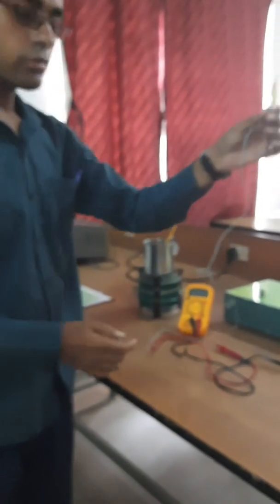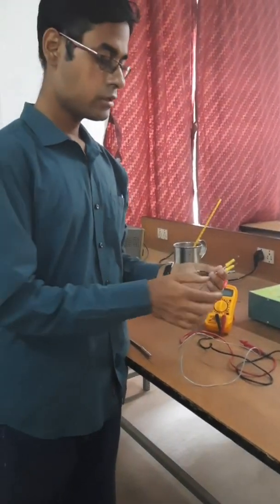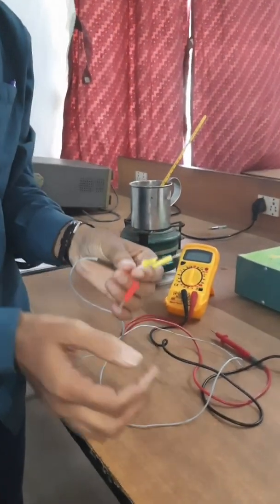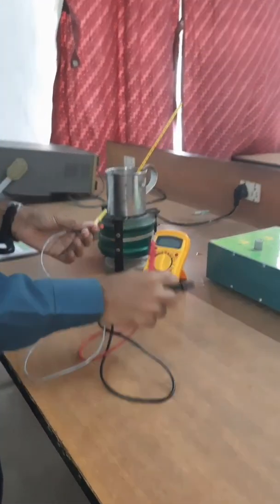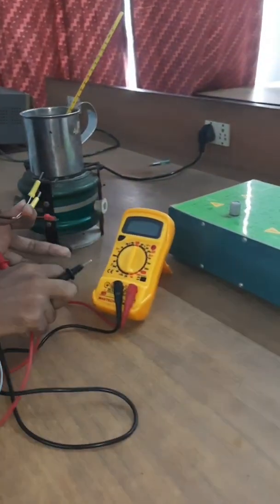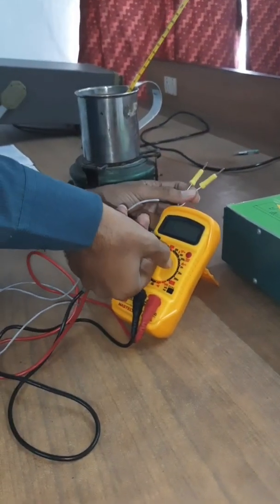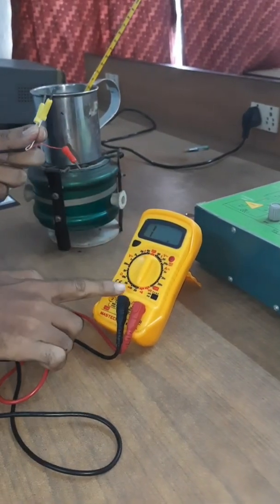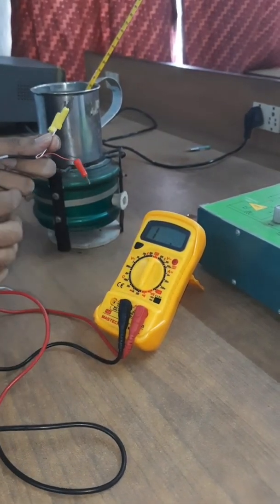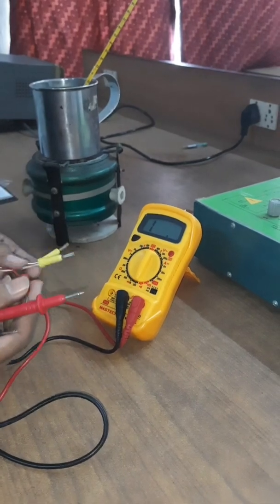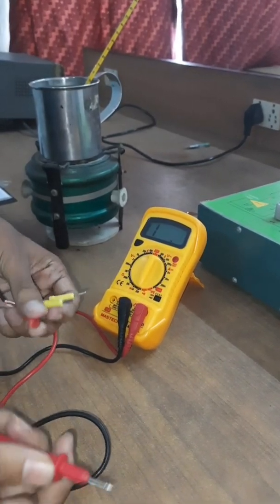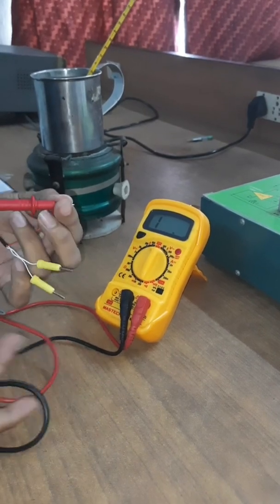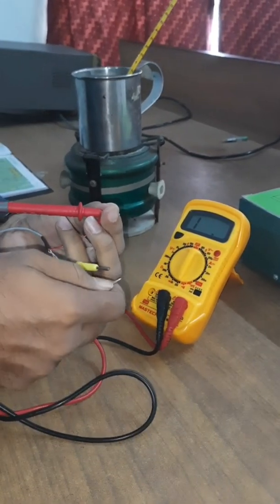If you think of it as a resistance, then we can measure the resistance of the RTD between the red and the white winding. Using a multimeter, we go to resistance, 200 ohm range. This is the 200 ohm setting for the multimeter. We connect red to red and black to any of these whites.